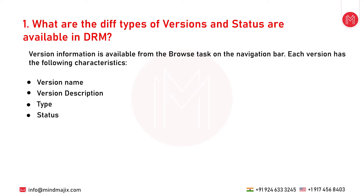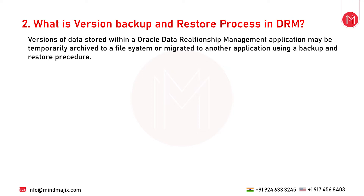Regarding status, there are four statuses available in DRM. The first is Working — users can edit the versions. The next is Submitted — only users who are the owner of a version or have the user role of Data Manager can edit versions with this status. The next is Finalized — no one can edit the versions. The fourth is Expired — no one can edit versions with this status.